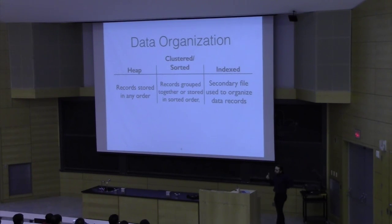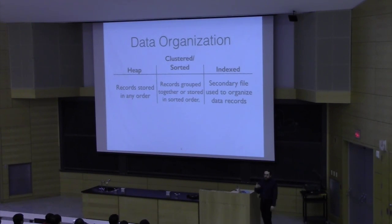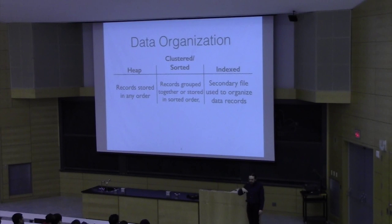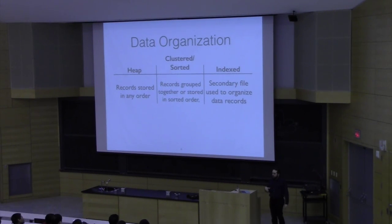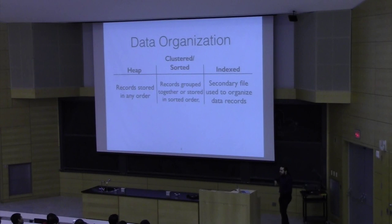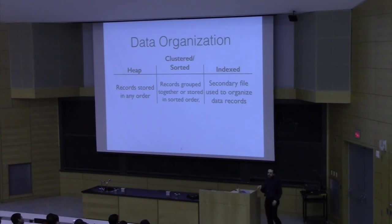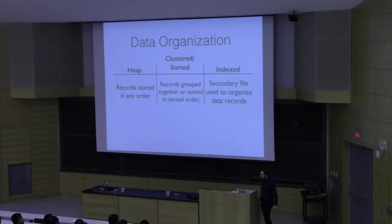The third organizational tactic is to build a secondary structure that organizes the data for you. This is kind of like having your data in a sorted list, but an index is a separate data structure — a separate file that tells you where the data that you're looking for is.